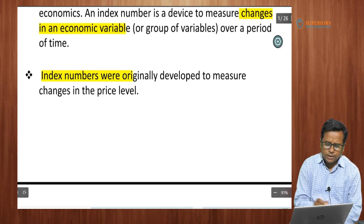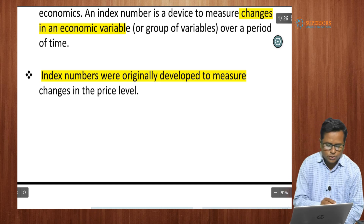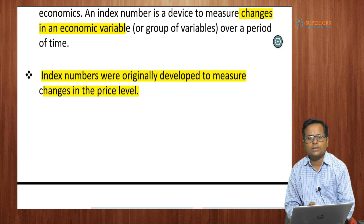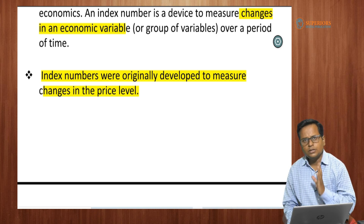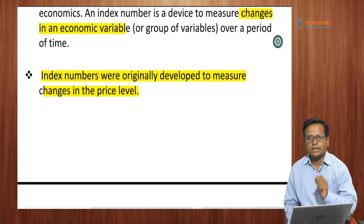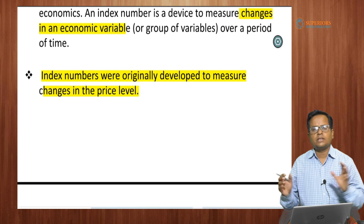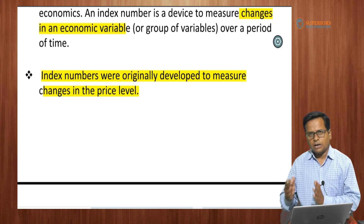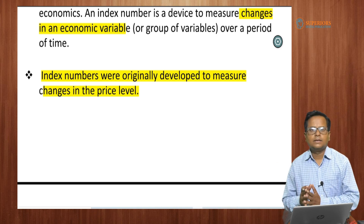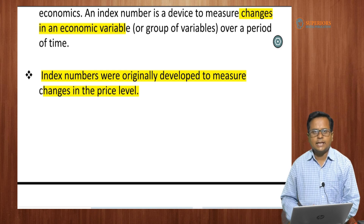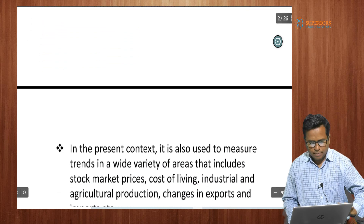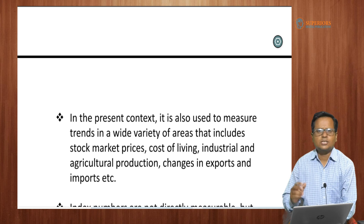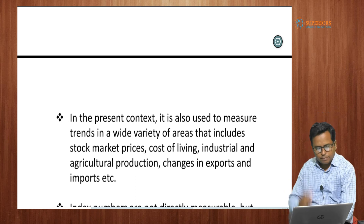Index numbers were originally developed to measure changes in the price level — in the general price level, what kind of changes are taking place over a period of time.